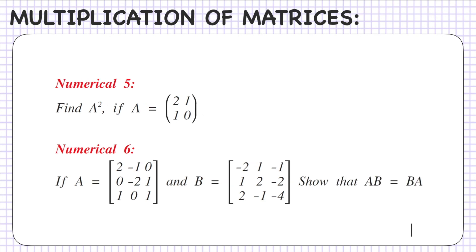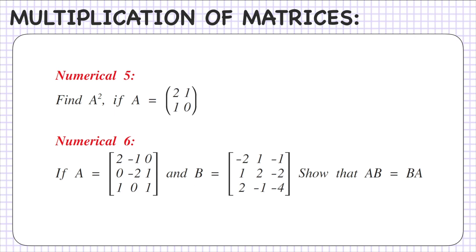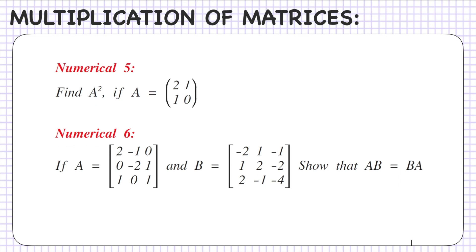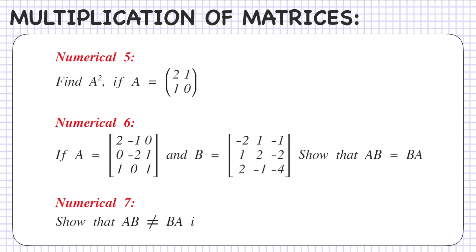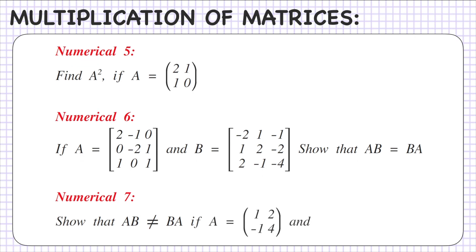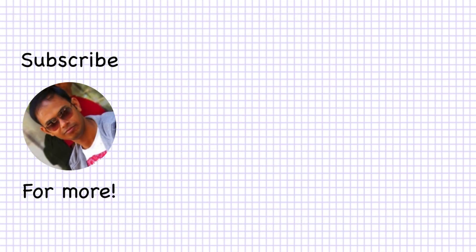For numerical 6, first find AB by multiplying A into B, then find BA by multiplying B into A, and verify the answers are the same. Numerical 7: show that AB is not equal to BA if A equals [1, 2; -1, 4] and B equals [3, 2; 1, -1]. This is similar to numerical 6 — please try to solve and find the answers in the description box. If you like this video, click the like button and subscribe to the channel. In the next lectures we will learn more algebra of matrices.